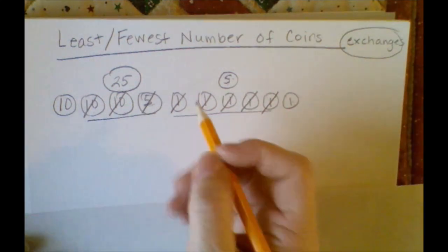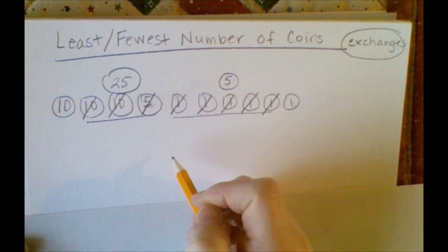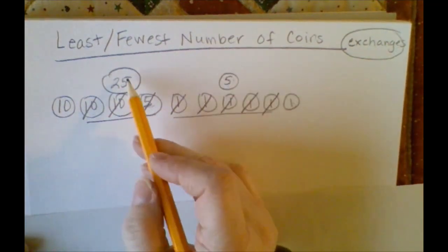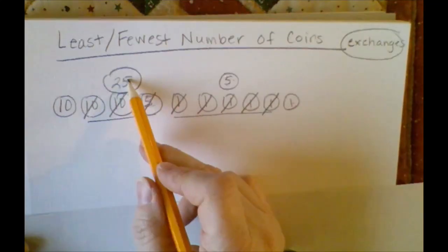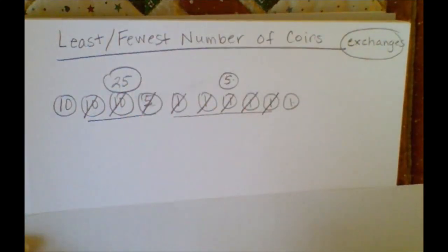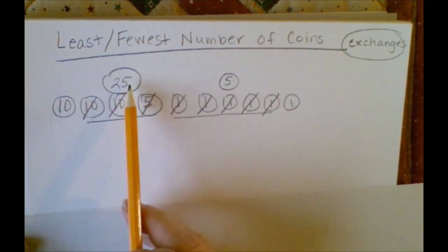Now we're going to do our running totals. Remember the running totals go below. Our coins are in different order, so you can always start counting your running total with your biggest coins. I think that's the easiest for me, rather than going 10 and then 25.